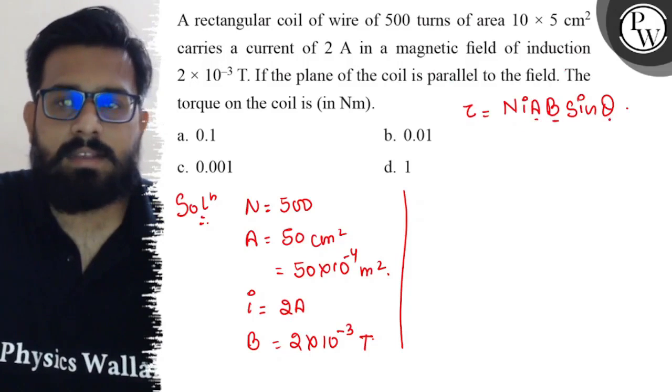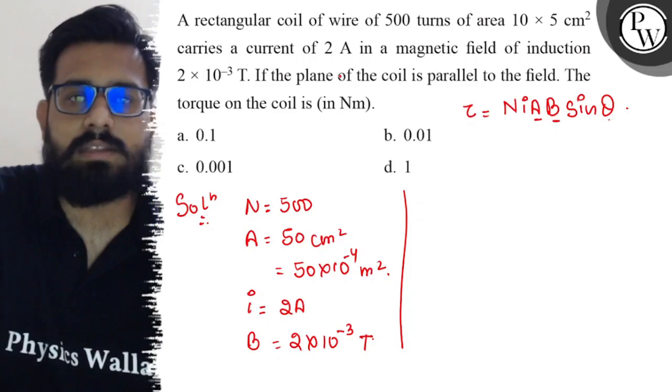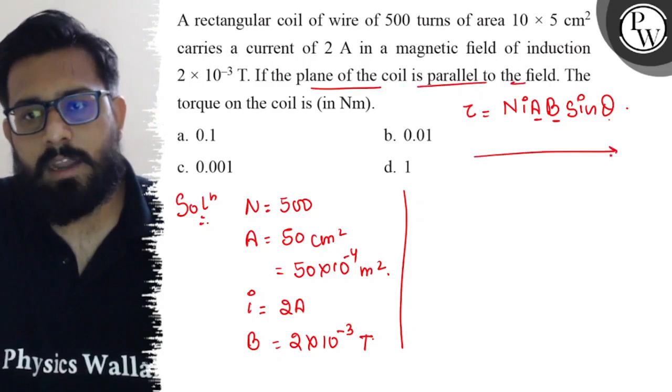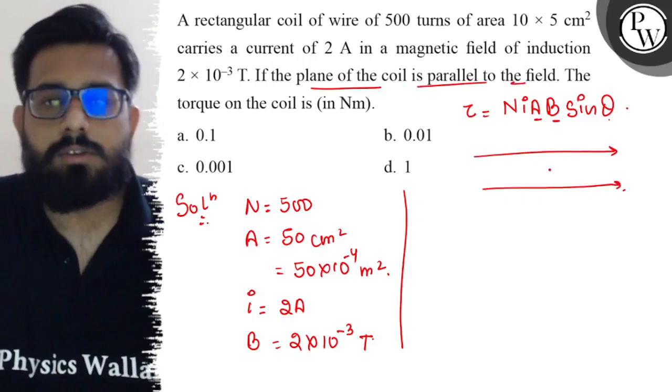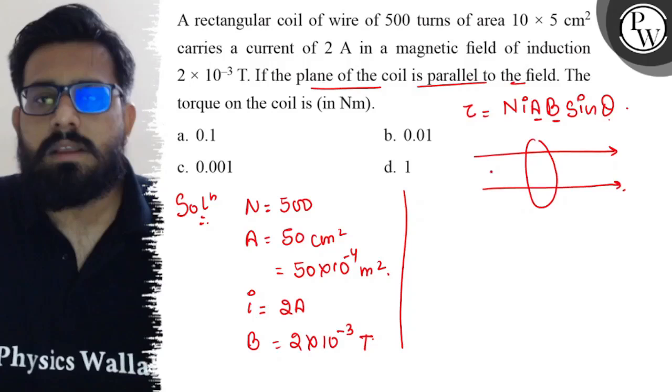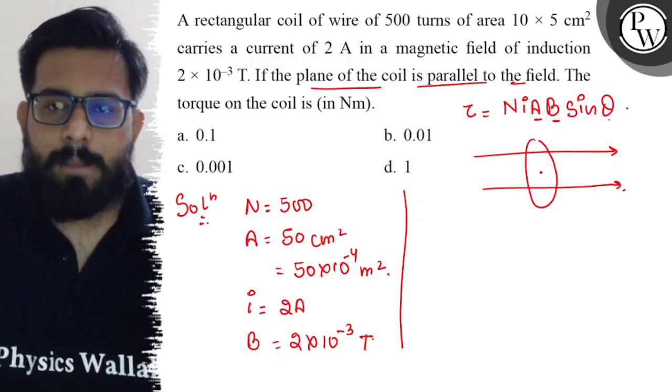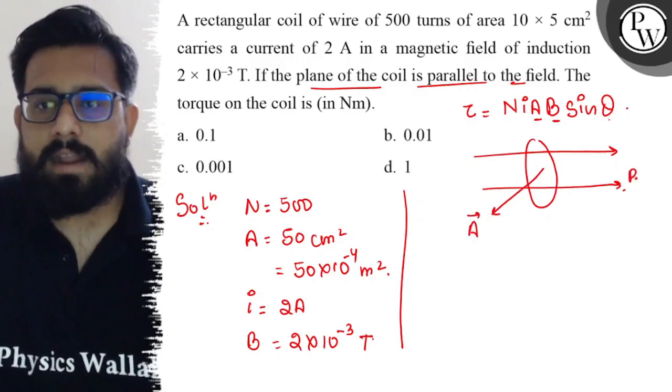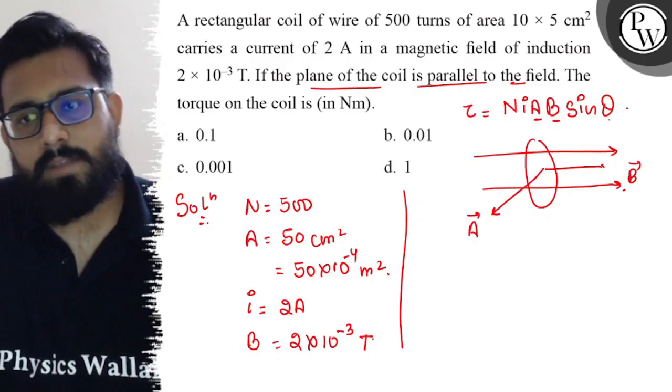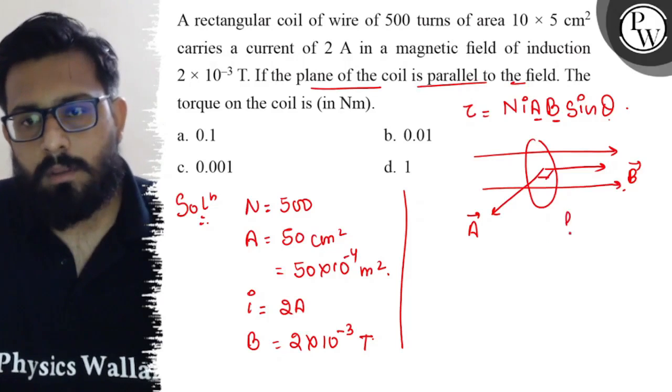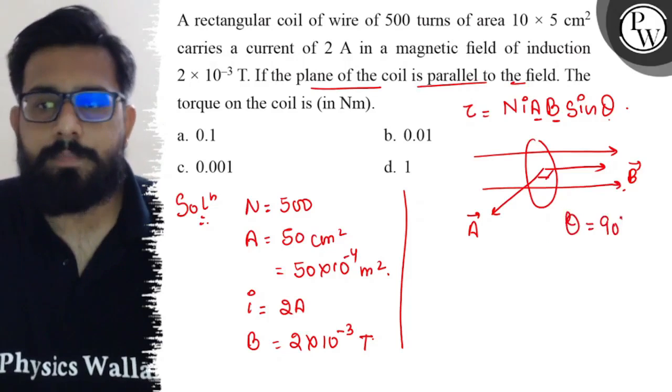Now here, theta is actually the angle between the area vector and the magnetic field. So you can see here the plane of the coil is parallel to the field. So suppose the field is in this direction, the plane is parallel to the field. This is the magnetic field, and you can see here the magnetic field and area vector is 90 degrees, so here theta comes out to be 90 degrees.